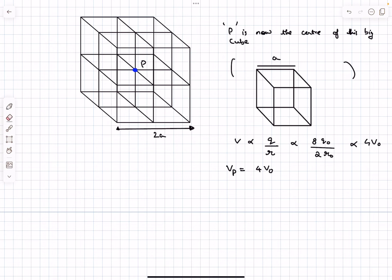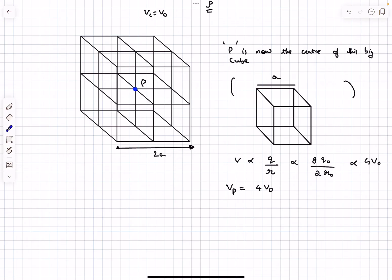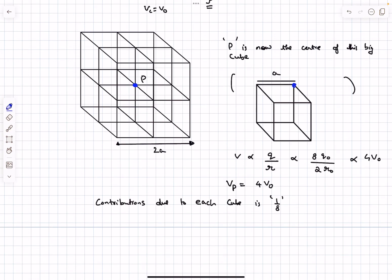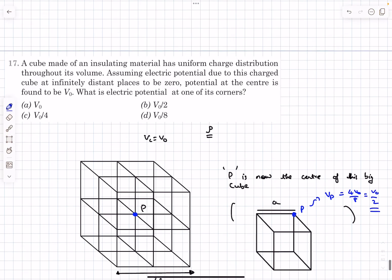But 4V₀ is not the final answer, because we added 7 imaginary cubes. The good thing is that the contribution of each of the 8 cubes to the potential at center P is identical, since P is symmetrically located with respect to each cube. So the contribution due to just one cube is 1/8 of the total. Therefore the potential at corner P is 4V₀/8 = V₀/2. That's the final answer.